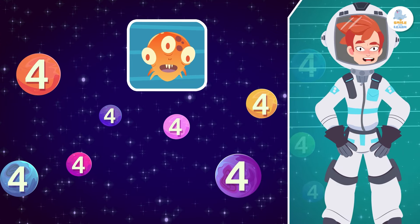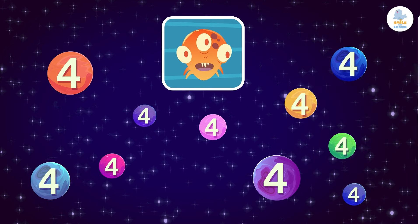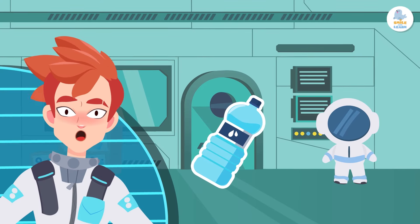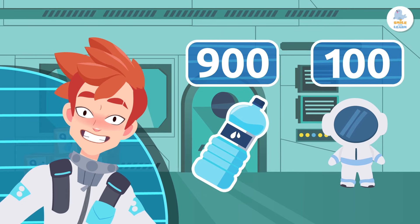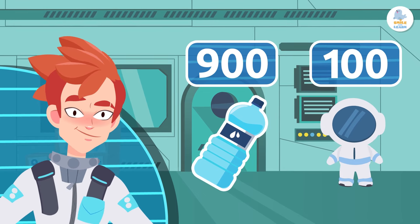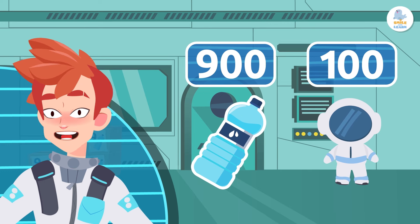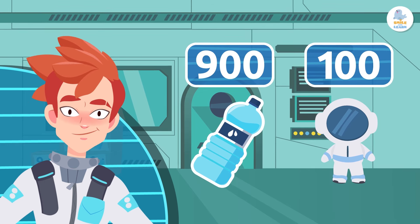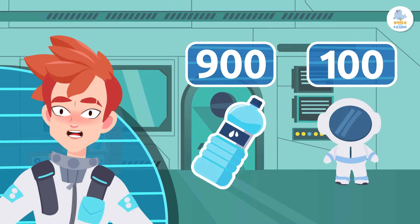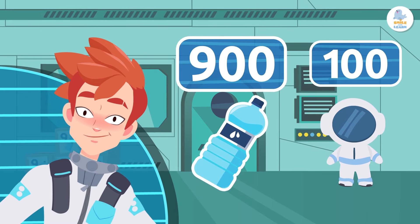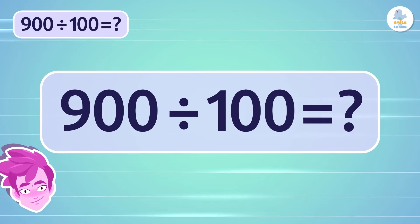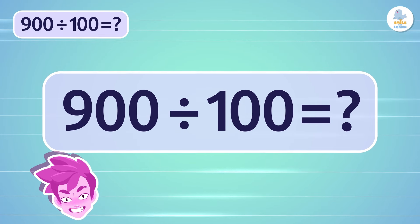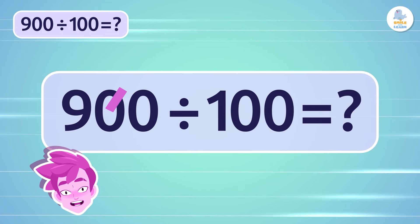Let's see another example. In the space station we have 900 bottles of water for 100 astronauts. If we want to distribute them equally, that's right — we divide 900 bottles by 100 astronauts. To do this in a very simple and quick way, we start by removing the two zeros from the number 900 and the other two zeros from the number 100.